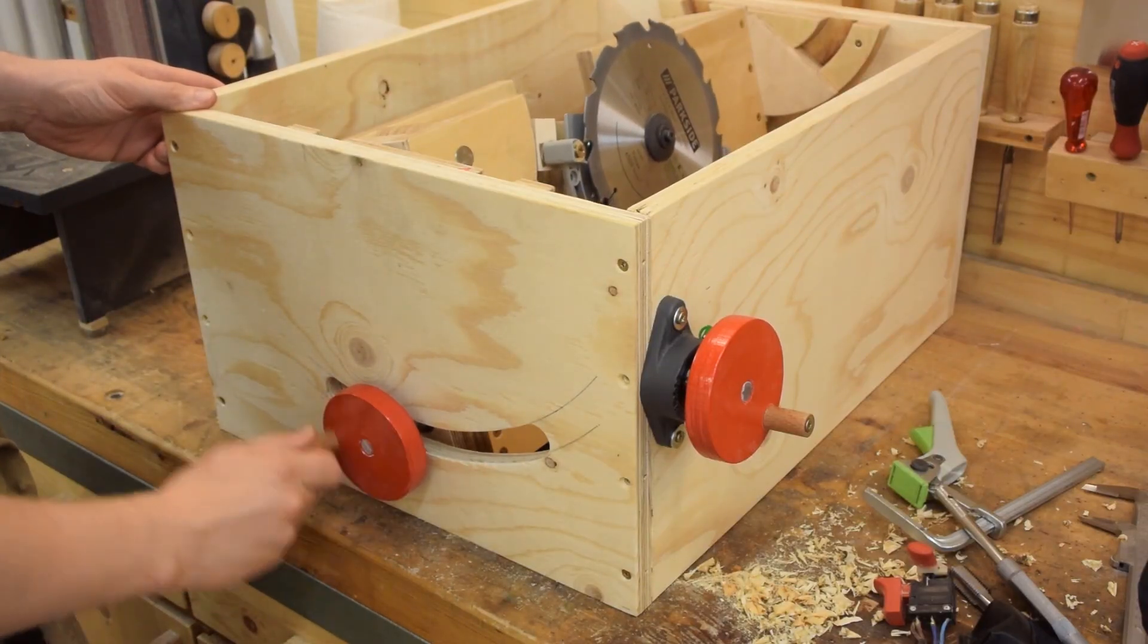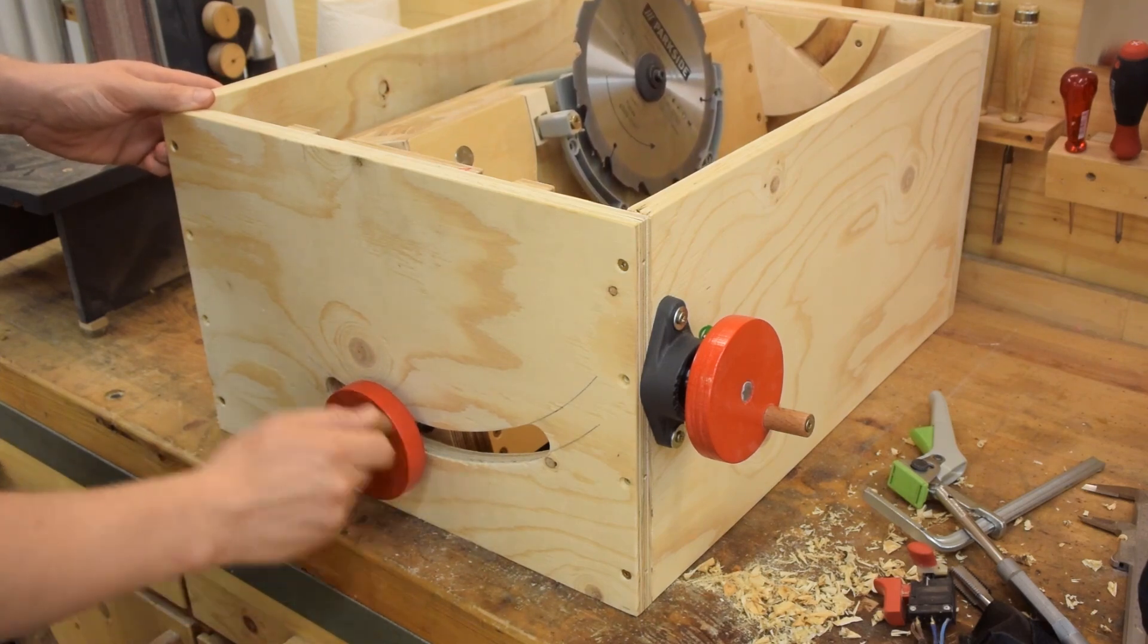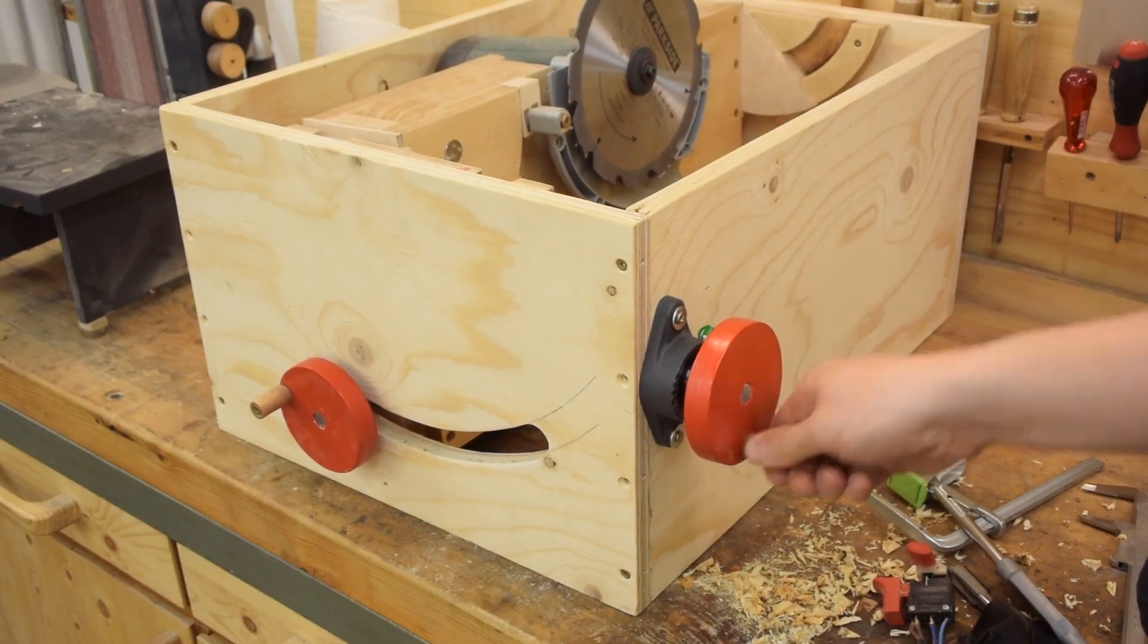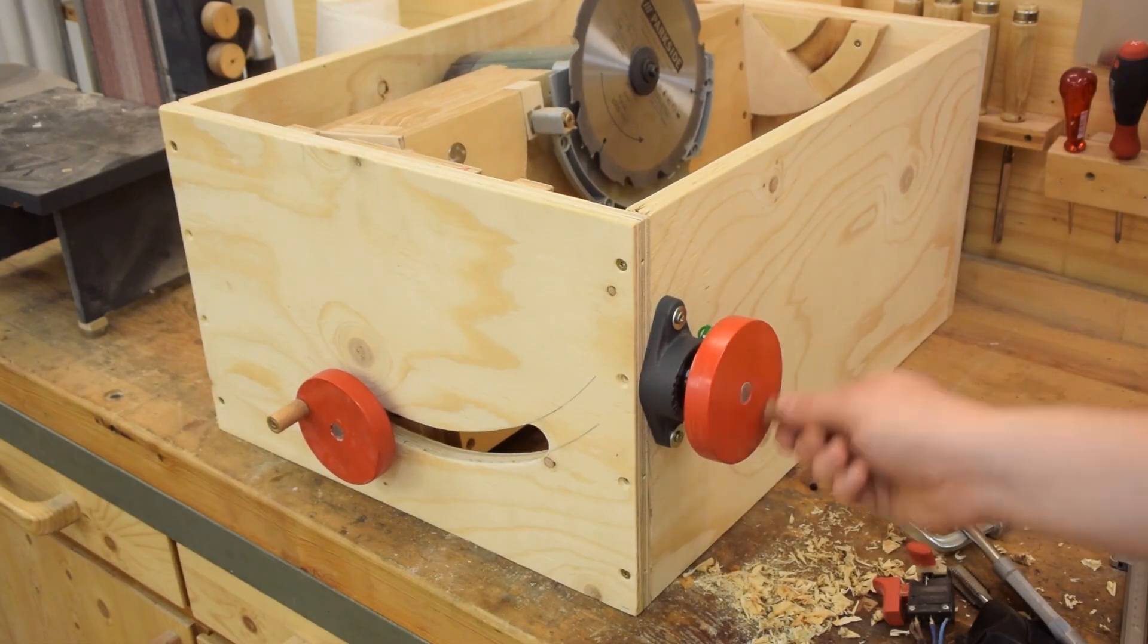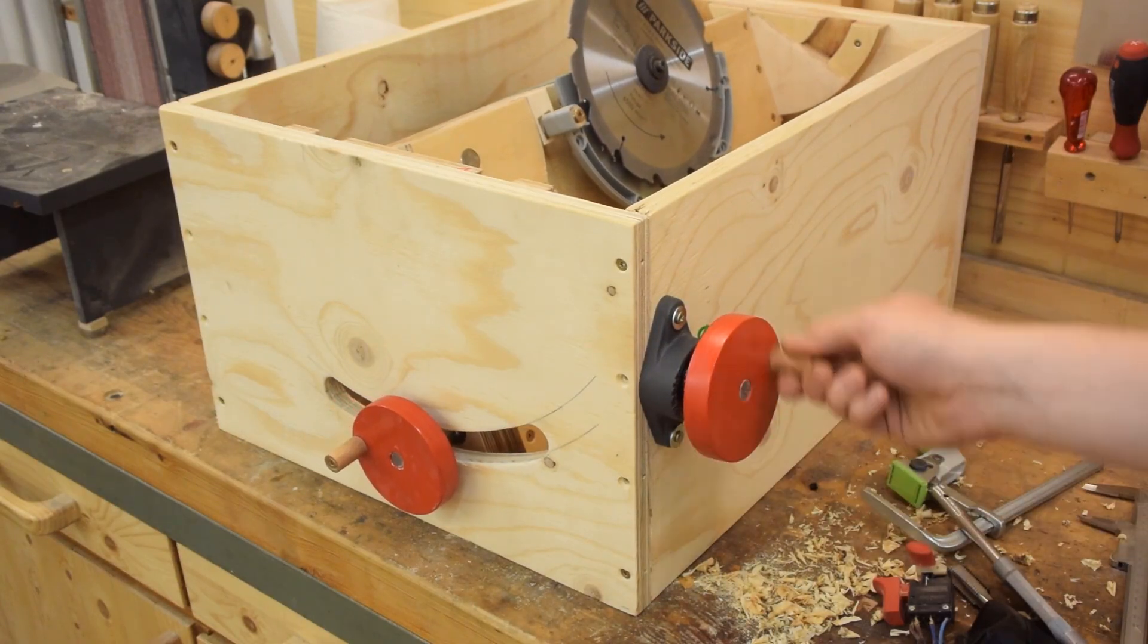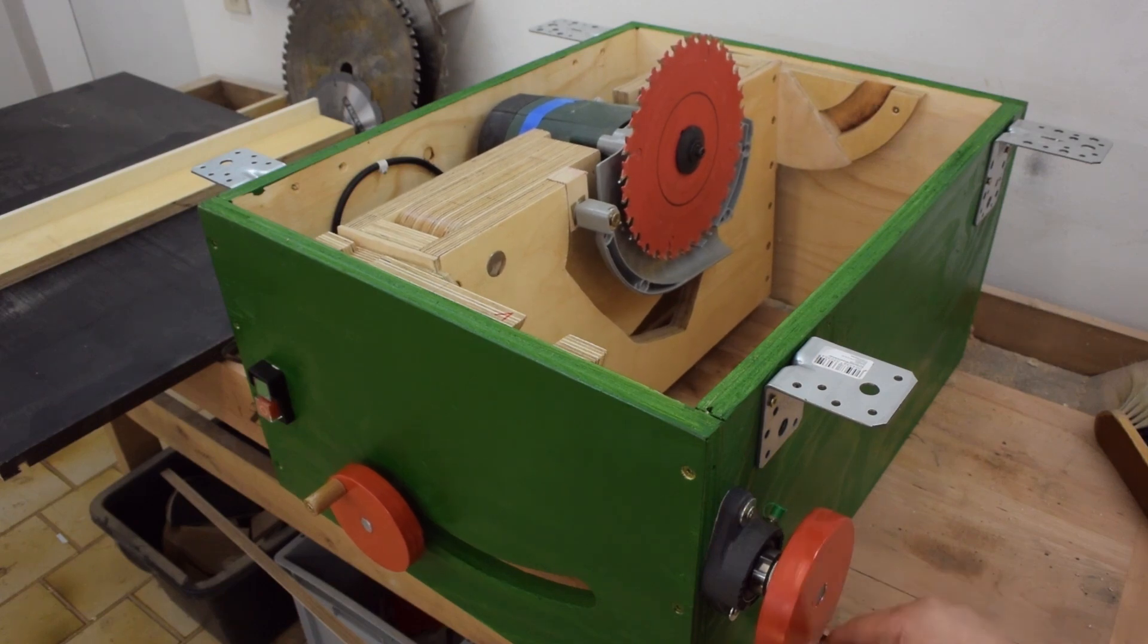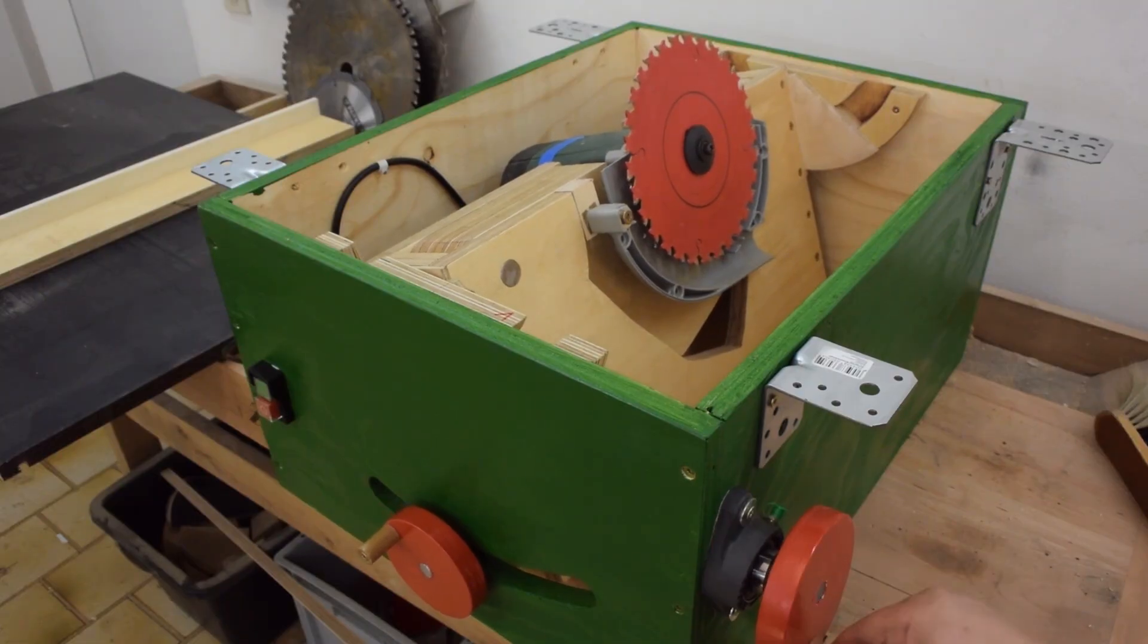And with the bearing screwed on and the handwheels attached I could try the mechanism for the first time. There was a little bit of interference because the hole underneath the pillow bearing was a little bit too small for that counter nut. But that was an easy fix with a rasp. And after putting a bit of grease onto that threaded rod the entire thing got just obscenely smooth.